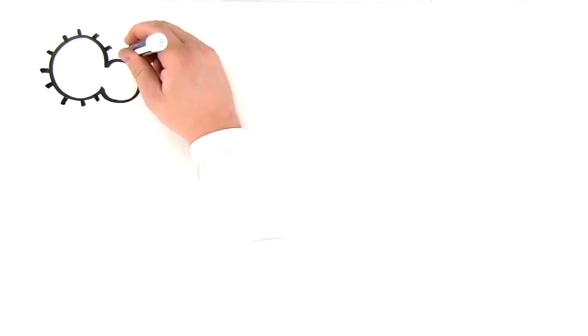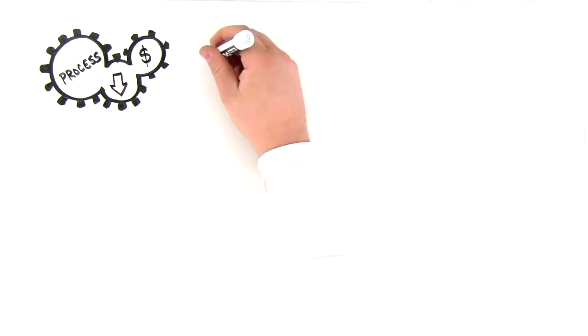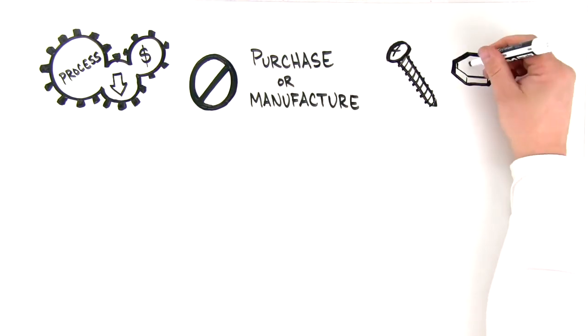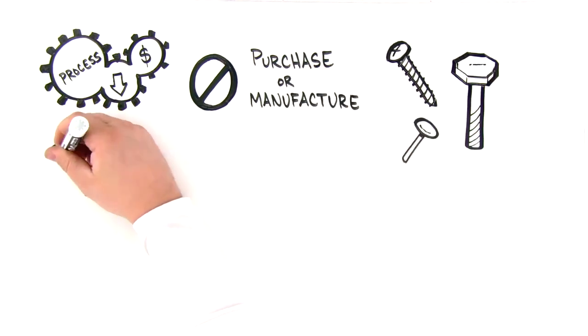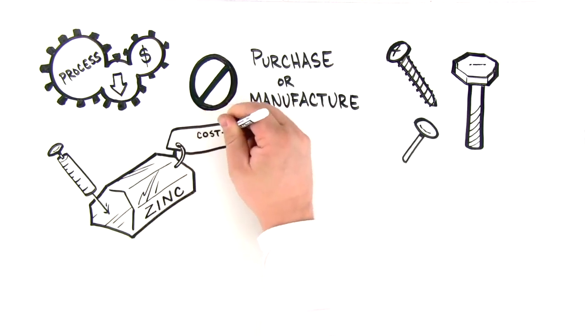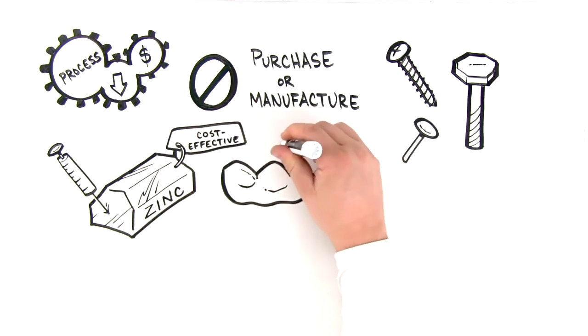This process reduces the cost of the final assembly because it eliminates the need to purchase or manufacture additional components like screws, bolts, or rivets. They are all replaced by the injected zinc alloy, which is not only more cost effective but also makes the assembled parts stronger.